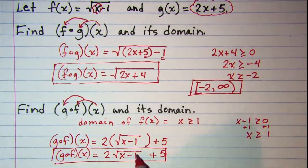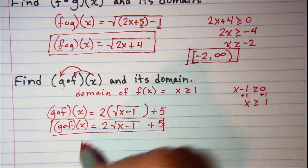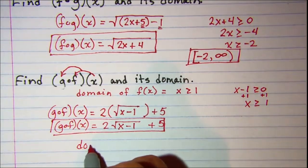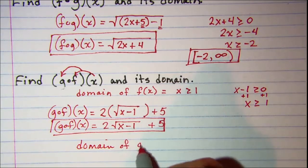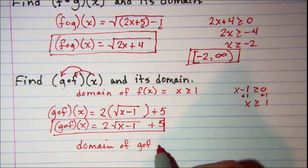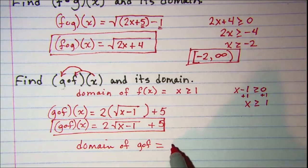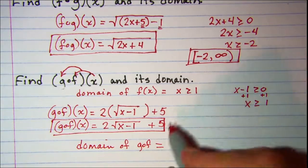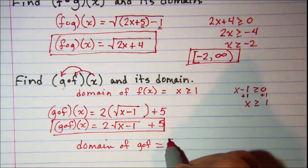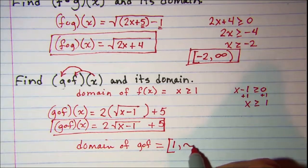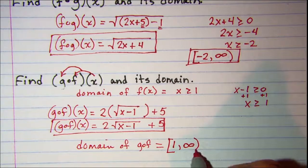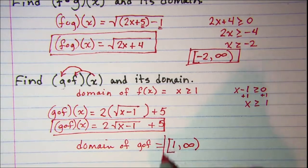And our domain is still x is greater than or equal to 1. So we can then write domain of g composition f equals, greater than or equal to 1 means I want to include the 1 in the interval, and then all numbers to the right of that on the number line.